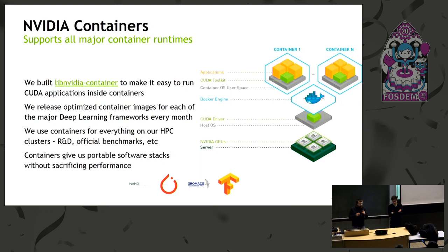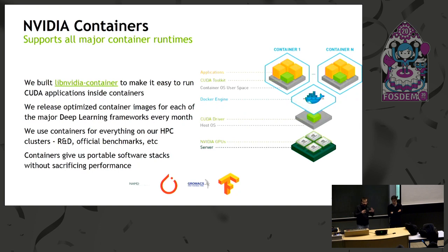It worked pretty well, and now it supports all runtimes — so that doesn't force us to use a specific one. We can use Alexa, RunC, Docker, Singularity, Kubernetes. We use containers at NVIDIA especially for deep learning and HPC, because some of these apps are difficult to package and install, and they sometimes conflict with each other. We put them in containers and host them on Docker Hub or our own container registry. People can download pre-built stacks for TensorFlow, PyTorch, biology, and more. We also use containers for benchmarking and machine learning.